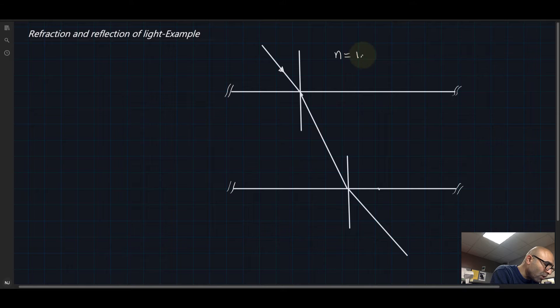It impinges on another medium of a refractive index 1.6. Since these are two different, I'm going to call this one medium one and I'm going to call this two. After that, the light leaves and goes back to the original refractive index.